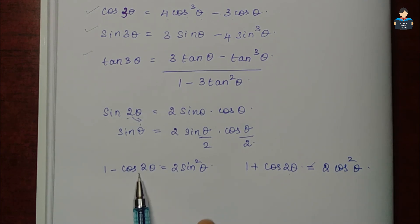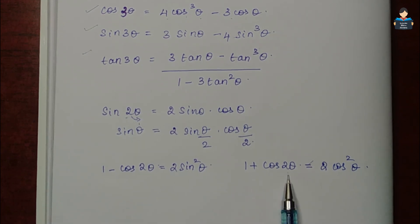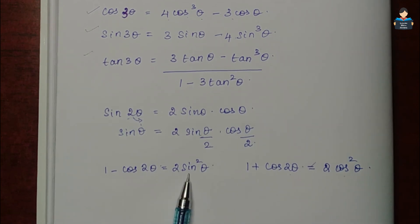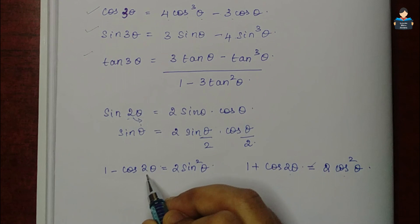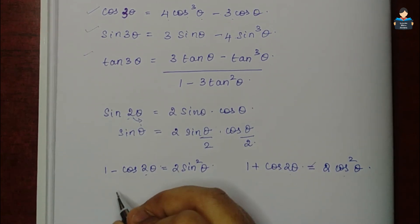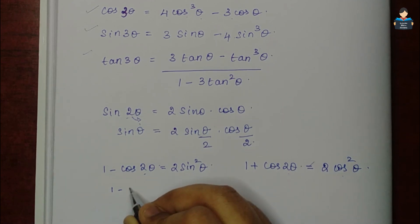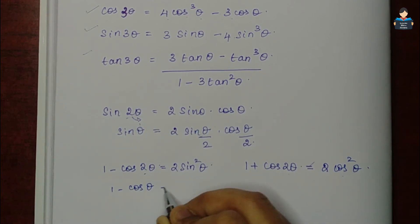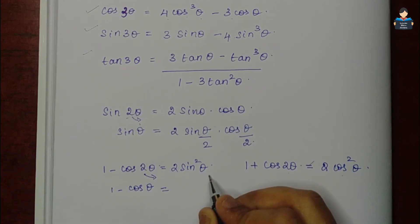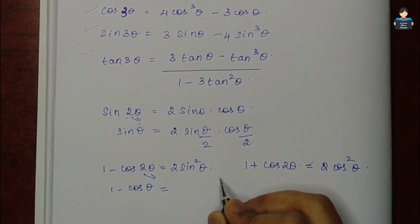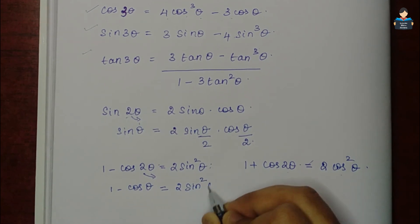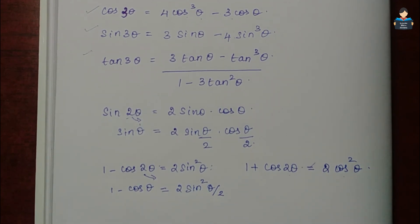Simplified: 1 - cosθ = 2sin²(θ/2), and 1 + cosθ = 2cos²(θ/2). Remember: plus corresponds to cos, minus corresponds to sin. The angle becomes θ/2 in these half-angle forms.